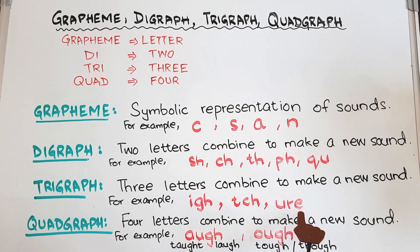Then we have quadgraph, four letters combined to make a new sound. For example, AUGH and OUGH. AUGH sometimes says 'aw' like in taught, and sometimes it says 'aff' like in laugh. If you want to know more about quadgraphs I have a complete video.